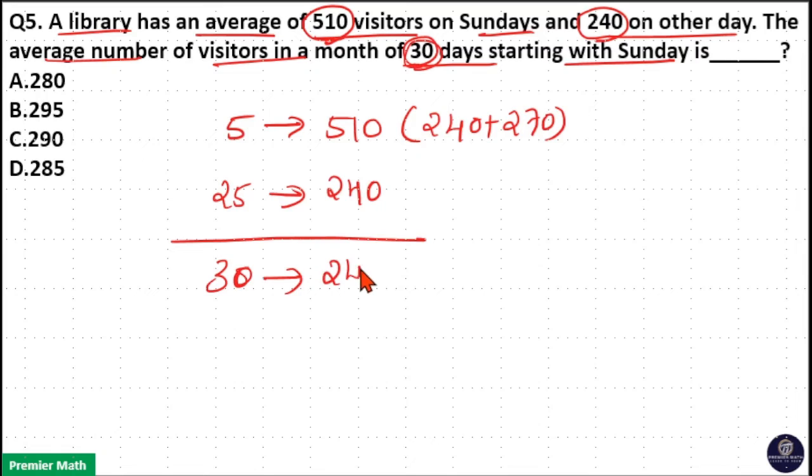Take the common average 240 for this 30 days plus extra average is 270. This 270 extra average is for these 5 days. So, 270 into 5 is the total extra visitors.